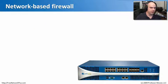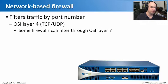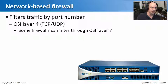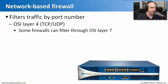Host-based firewalls are in a host, but network-based firewalls are running on the network, so there are different requirements for those devices. They usually filter traffic coming through by port number, like a TCP port or UDP port. There are also many firewalls that can filter up through all seven layers of the OSI model, where they recognize what application is going through the network and really examine it.